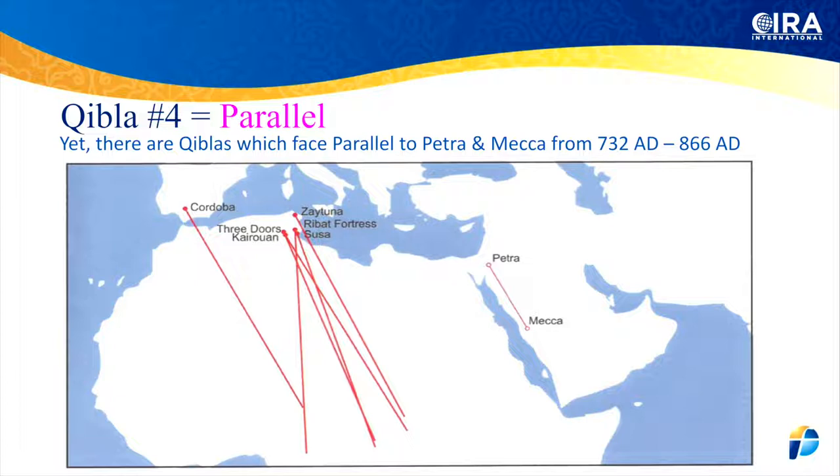King looks at these parallel mosques and takes each one of them — having not been there himself — and says: well, one of them is because of the sun, another one is because of the stars, another one is following the equinox, another one is following the building walls. He even refers to the solstice lines — the two lines of where the sun sets on the longest and the shortest day of the year.